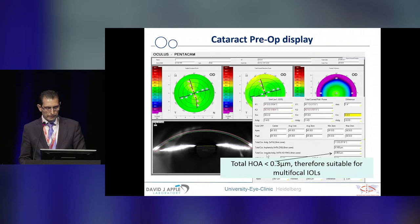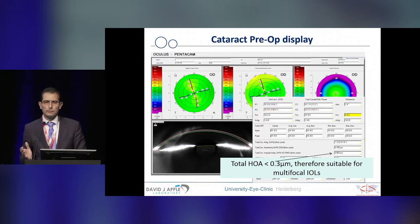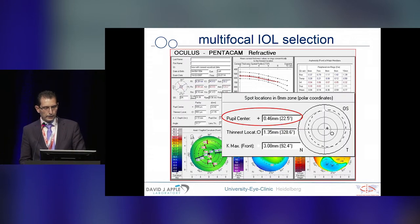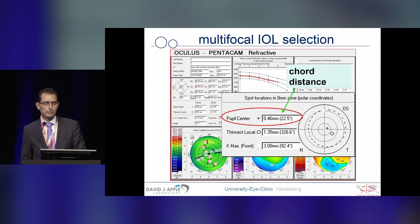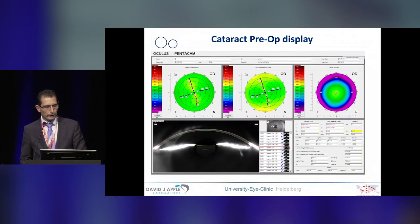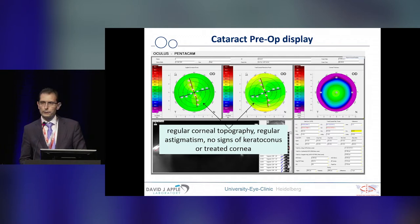When you look at the total corneal irregular astigmatism and higher-order aberrations, you can see the values: when they are beyond 0.3 microns, the patient might not be suitable for implantation of a multifocal IOL. Chord distance is another factor to consider for multifocal IOL implantation, as is corneal shape with regard to astigmatism and to exclude keratoconus. These are addressed in these two charts as well.